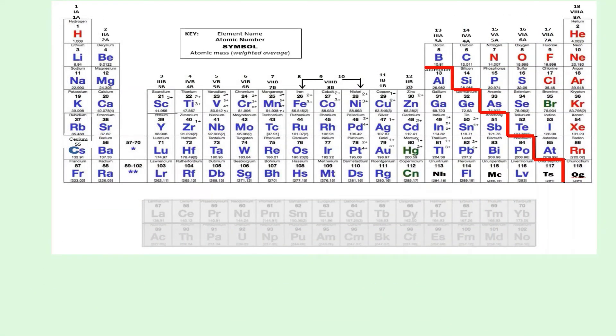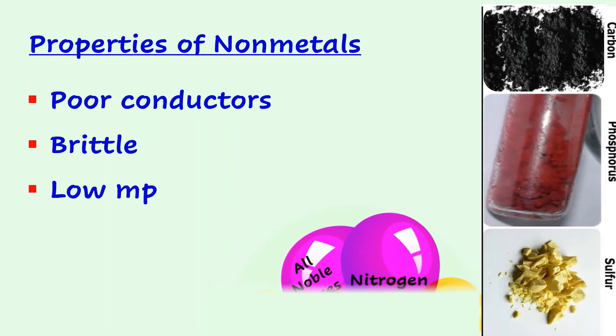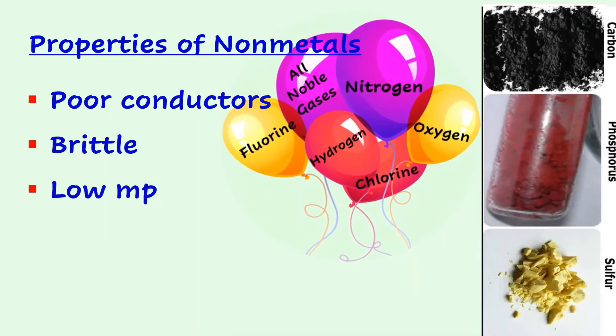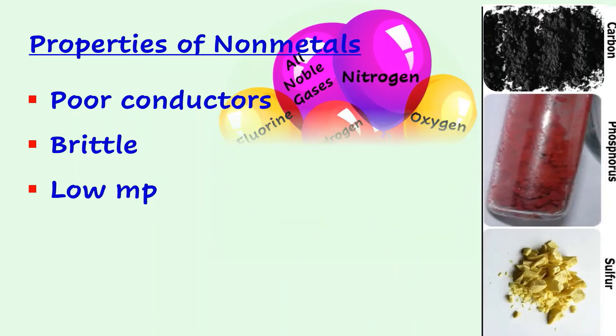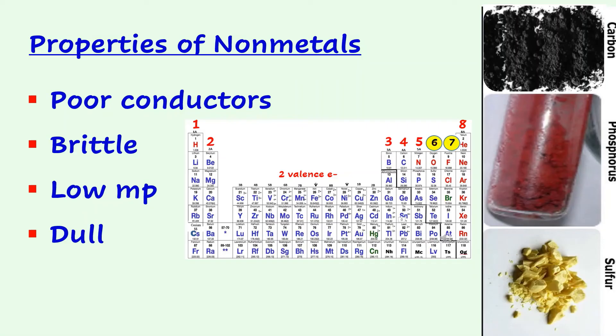Non-metals are on the right-hand side of the zigzag line, plus hydrogen. Non-metals are poor conductors of heat and electricity. They tend to be brittle and have low melting points. Many have melting points and boiling points so low, they're already gases at room temperature. Non-metals are dull rather than shiny, and their outer energy levels are closer to being full than empty, so non-metals tend to gain electrons to form negative ions called anions.